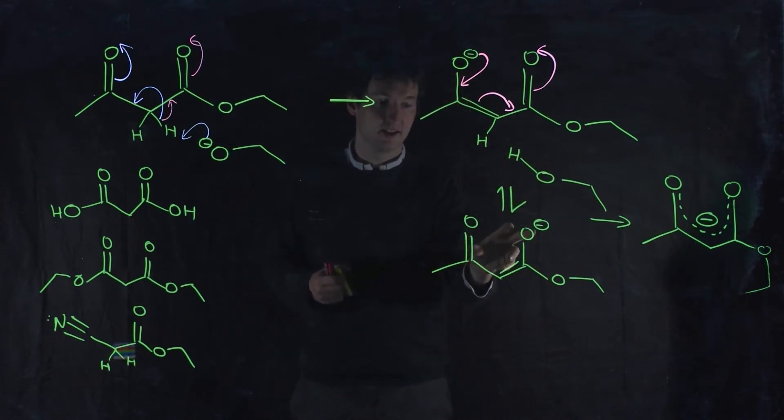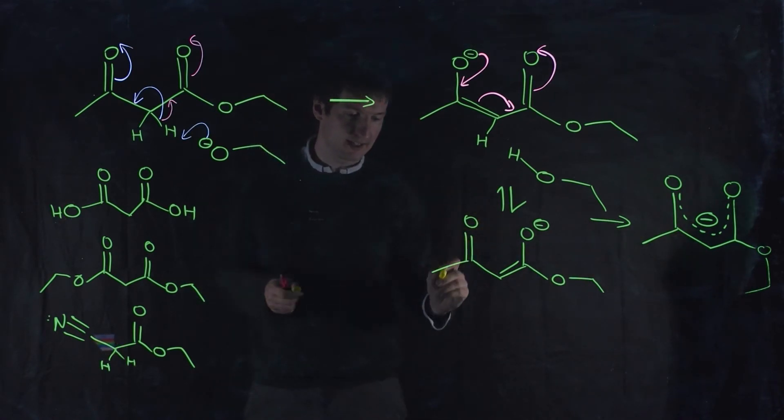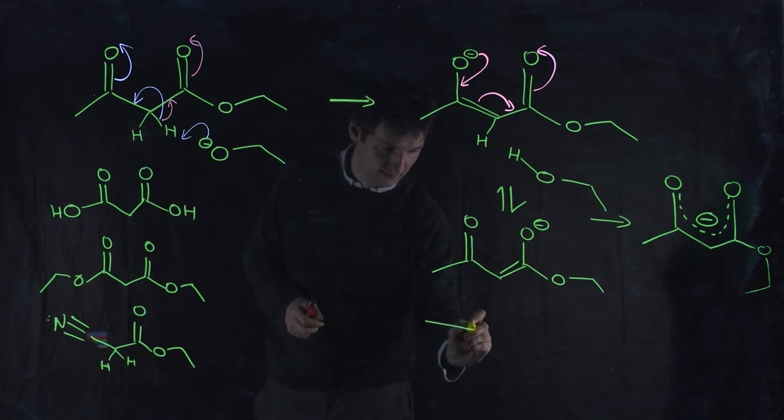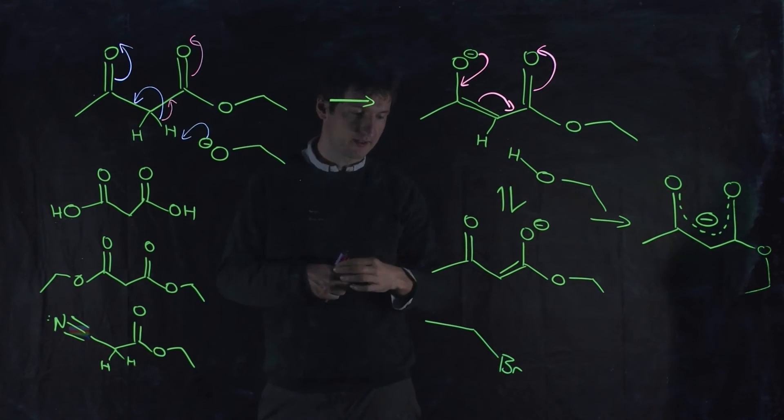Well, what are we going to do once we form this? These are reasonably good nucleophiles. They're not as good a nucleophile as, say, a regular enolate, because they are stabilized, but they will still act as nucleophiles. So, let's put in an electrophile. And let's say our electrophile is bromoethane. Put in our bromoethane. What is going to happen?